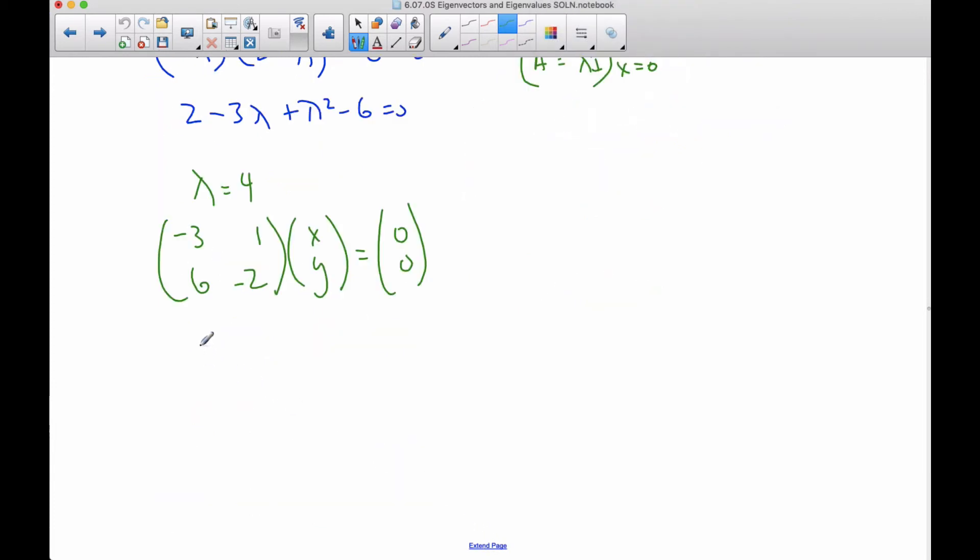Continuing to solve this, I get negative three X plus Y is zero, and six X minus two Y is zero. And it's always good to check here to make sure that these are the same equation, just different multiples of the equation.